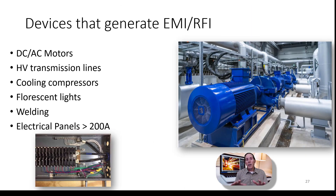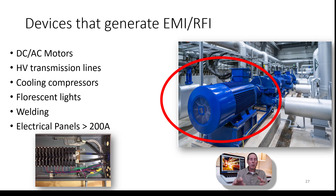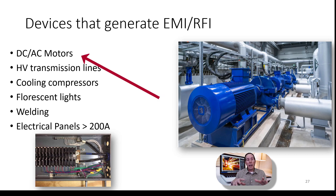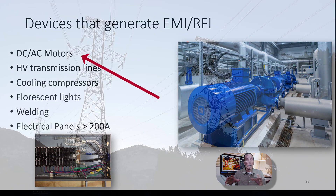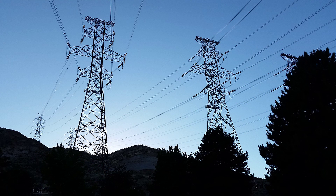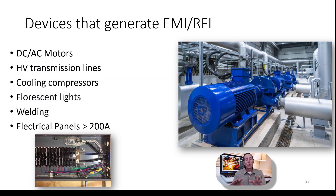What are devices that generate EMI and RFI? Remember, EMI is typically lower frequency — very often 60 cycle. So a big motor that is running would generate a lot of EMI. AC/DC motors are typical generators of some RFI and lots of EMI. High voltage transmission lines — if you live in a neighborhood with power transmission lines, they will tell you that they experience EMI and RFI.